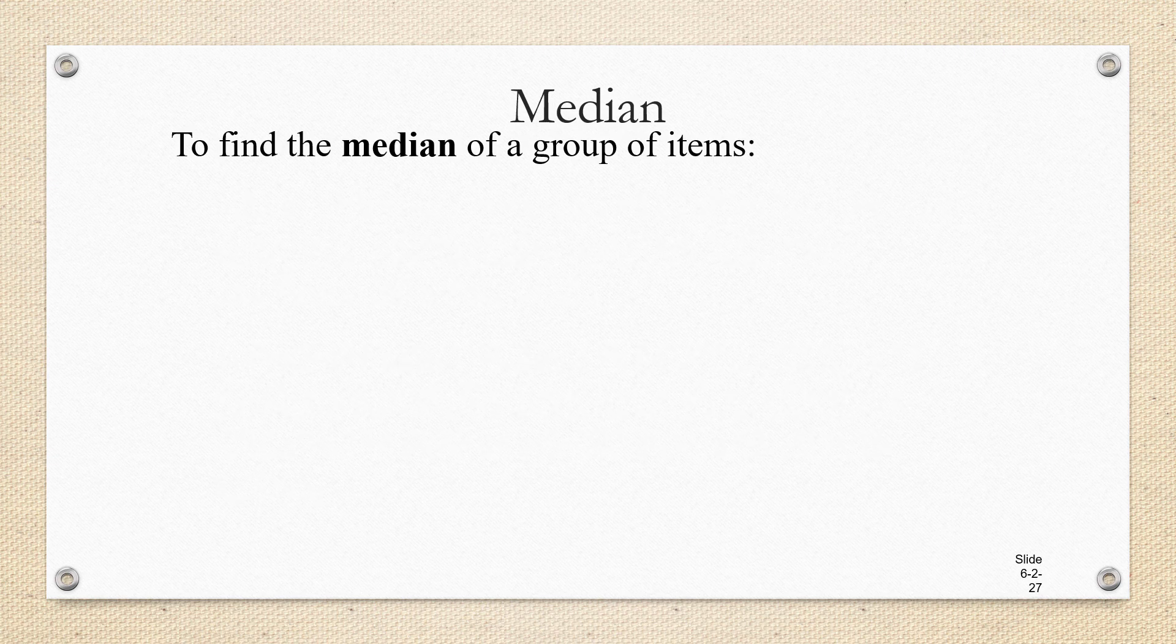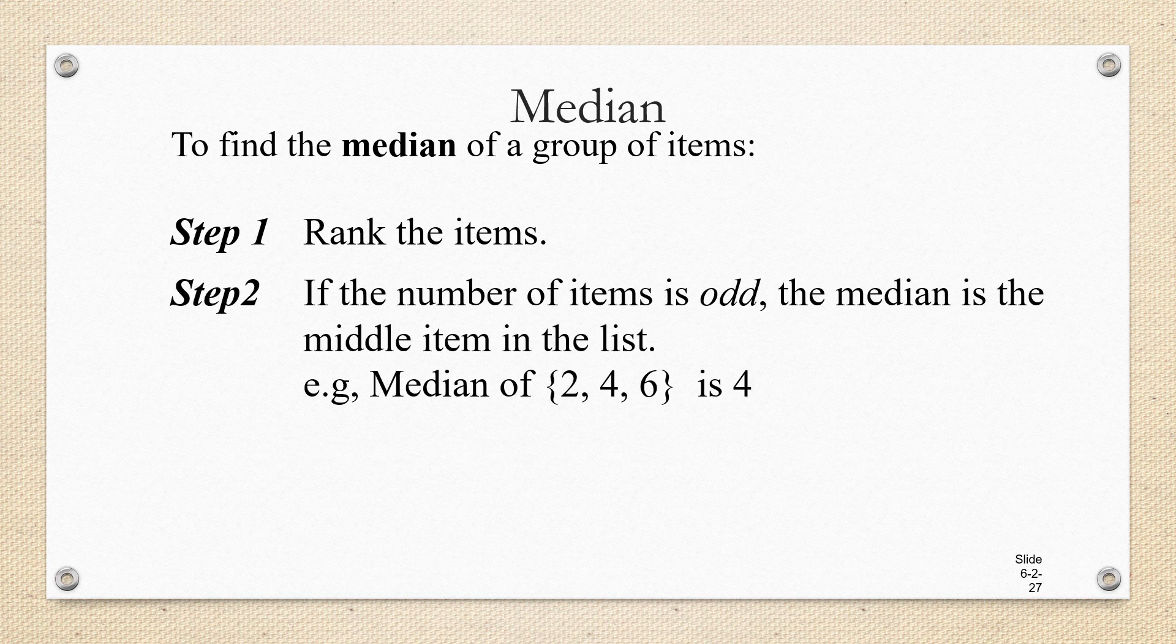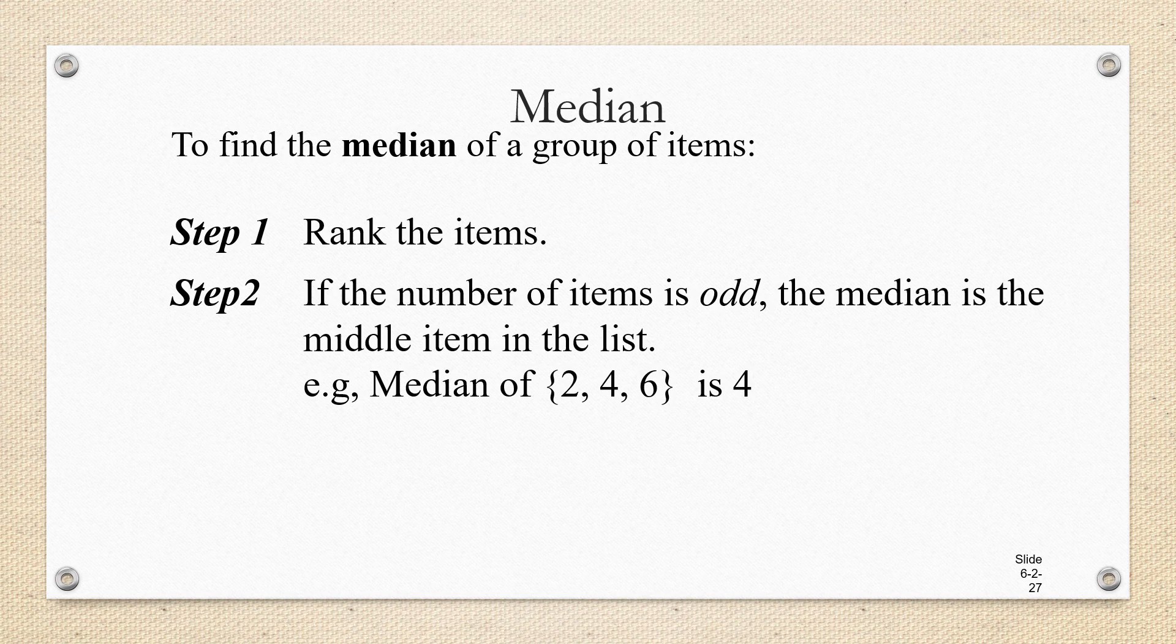To find the median of a group of items, the first thing you need to do is rank the items. That means put them in numerical order. If the number of items is odd, then the median is the middle item on the list. For example, the median of 2, 4, 6 is 4.